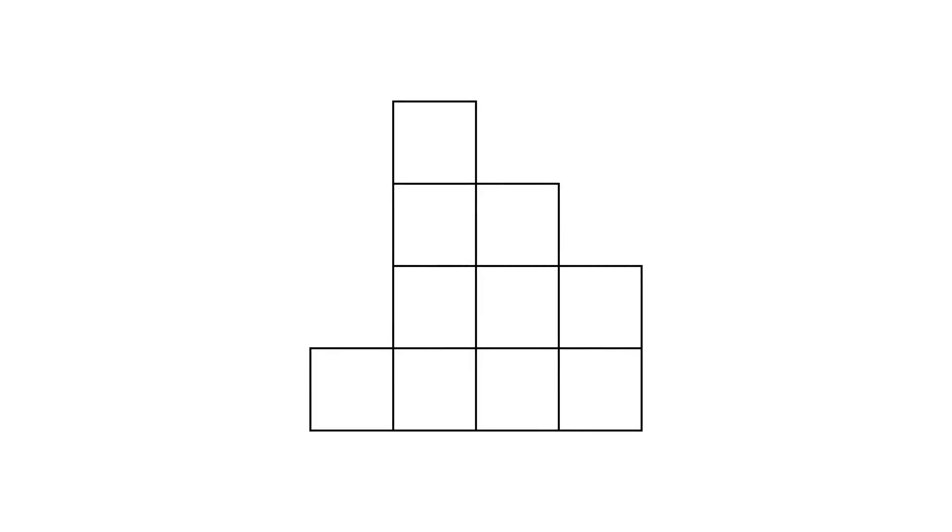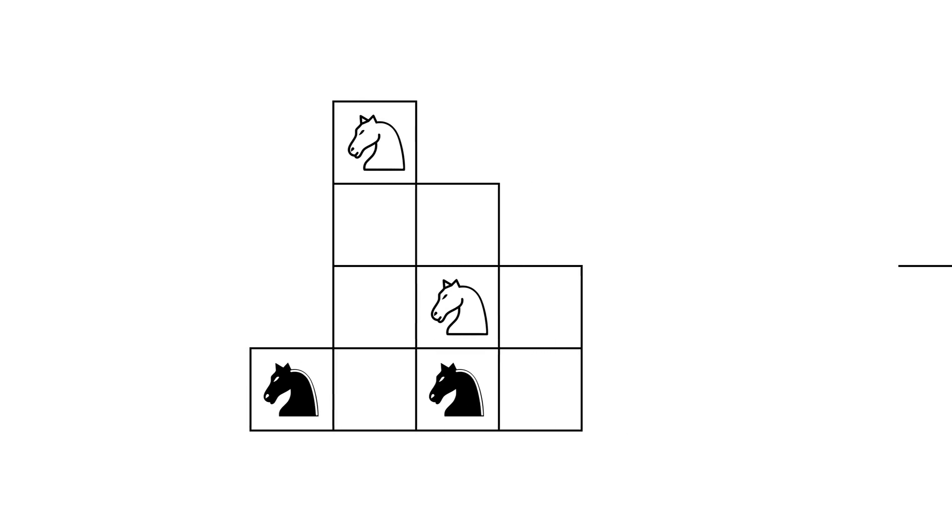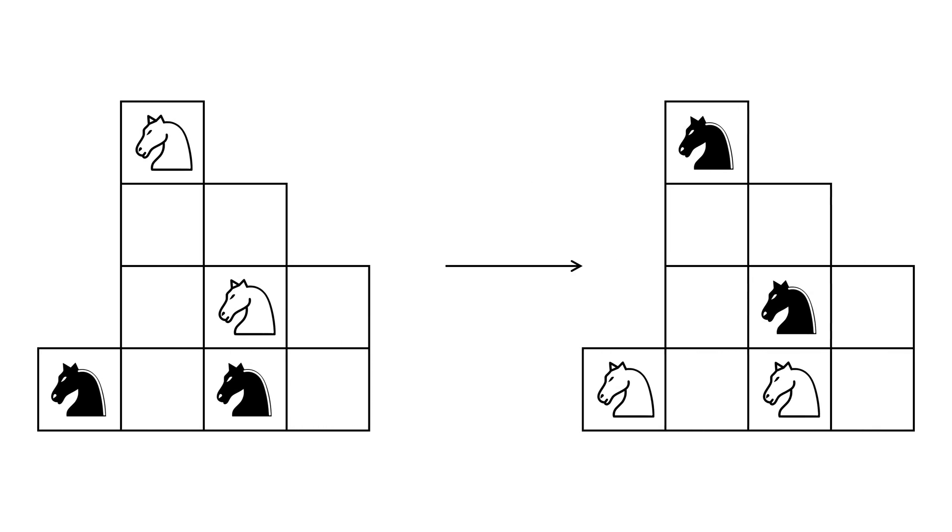We have a weirdly shaped chessboard with four knights on it, two black and two white. The challenge is how to find the minimum number of moves such that we swap their positions.